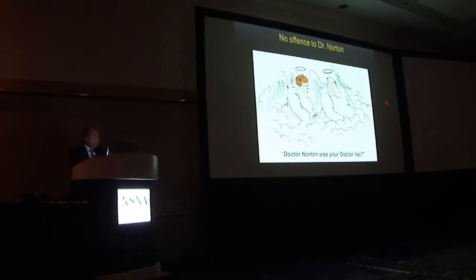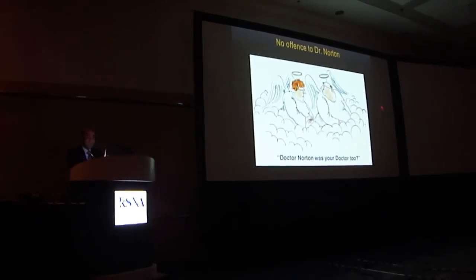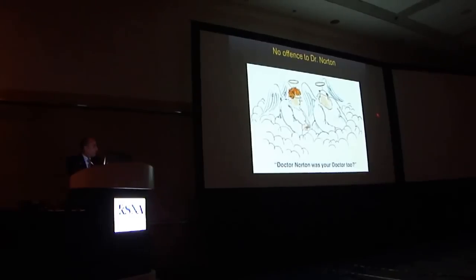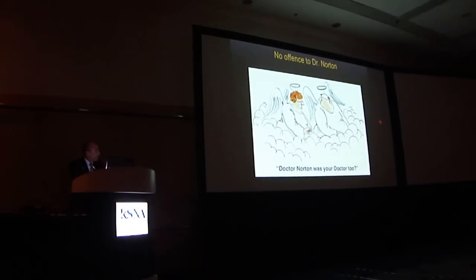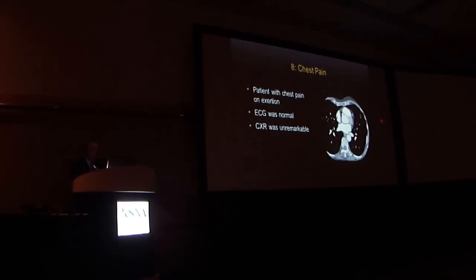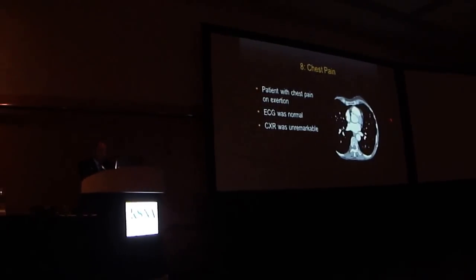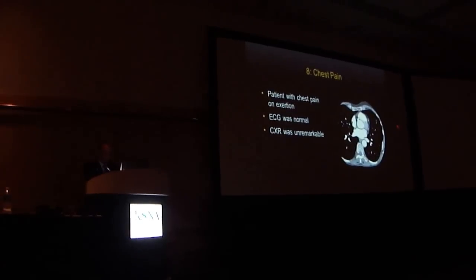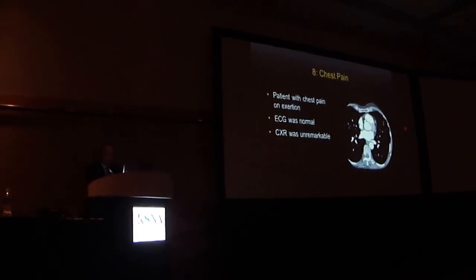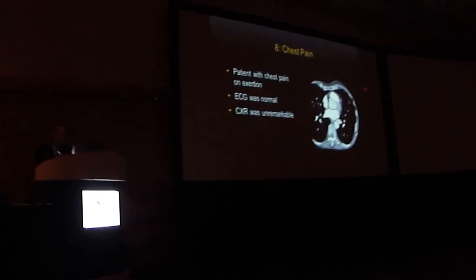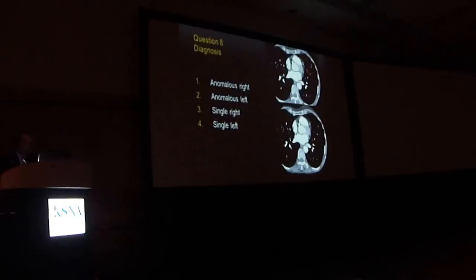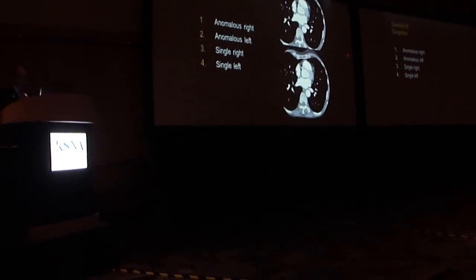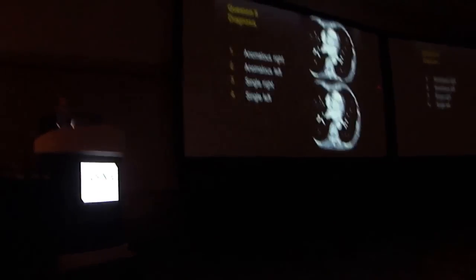I hope after today none of us will be Dr. Norton — our patients will discuss us on this earth and not in heaven. Next patient: chest pain on exertion. ECG was normal, chest x-ray was unremarkable. Axial CT demonstrated the abnormality. Differential considerations were anomalous right, anomalous left, single right, or single left coronary artery.